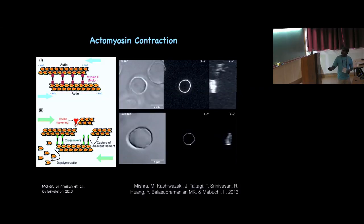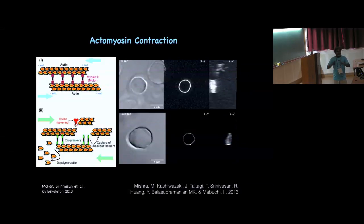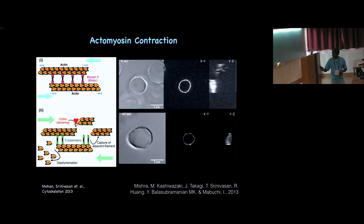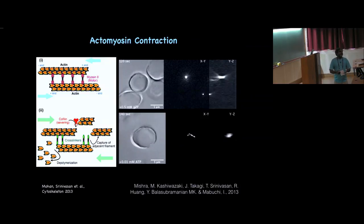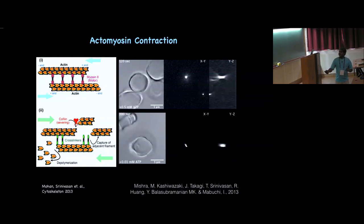Here is an example where the actomyosin ring is completely exposed: cells were protoplasted and the membrane dissolved with a detergent, so the ring remains with some membrane still bound to it — like a ghost, without cellular components except the ring components already present. This includes actin, myosin, and other ring components like formins needed for actin polymerization. As soon as you add ATP, it just constricts. This shows that actin, myosin, and a few crosslinkers are sufficient for actomyosin ring constriction. If you block myosin activity, constriction does not occur.